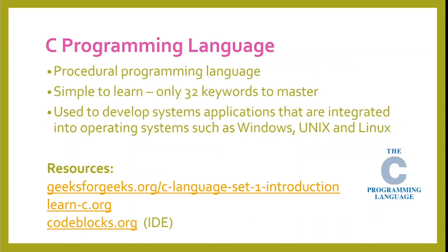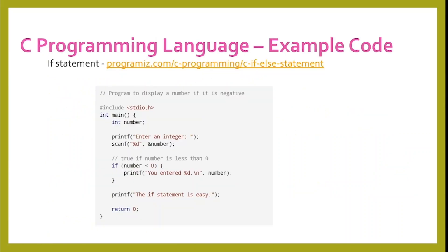The C programming language is a procedural programming language. It's simple to learn with only 32 keywords to master. It's used to develop system applications that are integrated into operating systems such as Windows, Unix, and Linux. Here's an example of C programming language with an if statement.